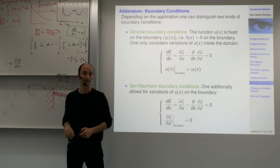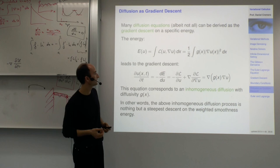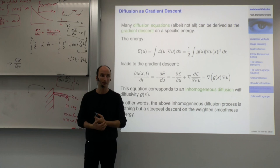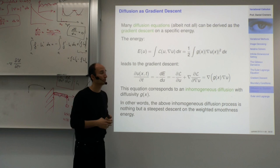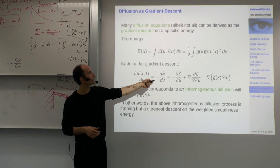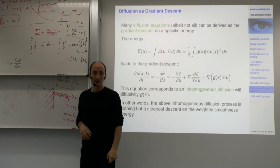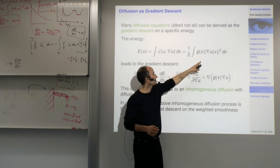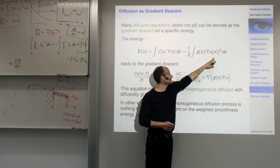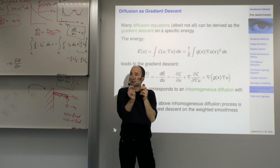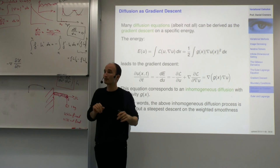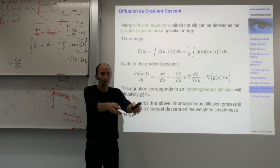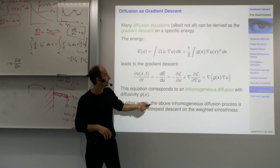These are the two classical boundary conditions: Dirichlet (u fixed on boundary, H=0) and von Neumann (dL by du prime = 0 on boundary). In practice you can have mixed boundary conditions — Dirichlet in some locations and von Neumann in others. The gradient descent on the Dirichlet energy is linear diffusion, and more generally we can consider a generalized energy: the Dirichlet energy weighted by a function G.